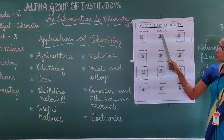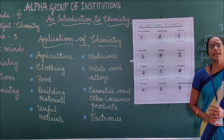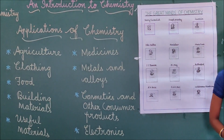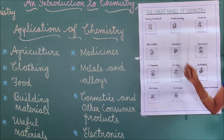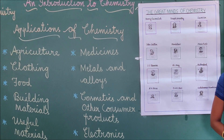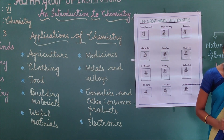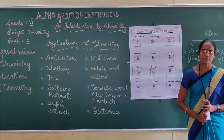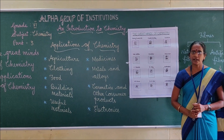Second one: Joseph Priestley. He was an English chemist and philosopher. He discovered 10 gases including oxygen, carbon monoxide and sulphur dioxide.